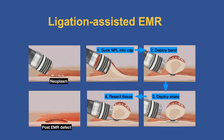Ligation-assisted EMR is, in my opinion, one of the most elegant procedures we perform — so simple and quick. We start by sucking the lesion into the cap; there are multiple bands so we can do this piecemeal if needed. Then we deploy the band, deploy the snare below the band, resect the lesion, and you see the post-EMR defect.